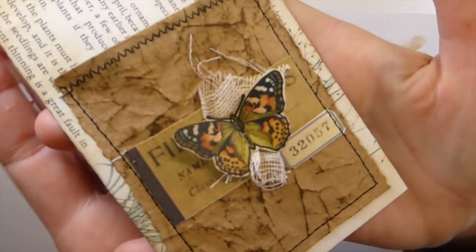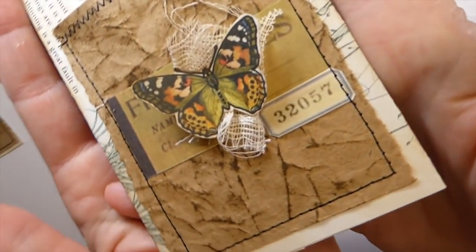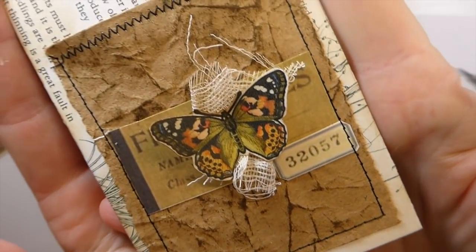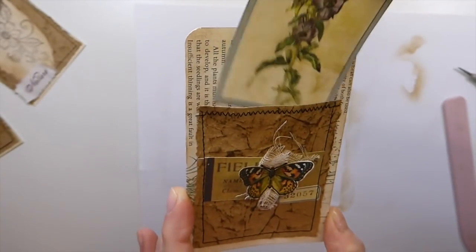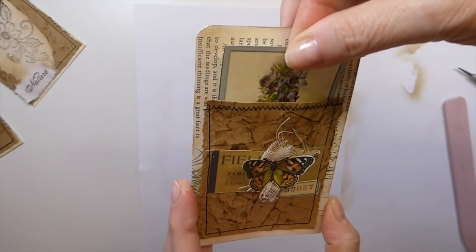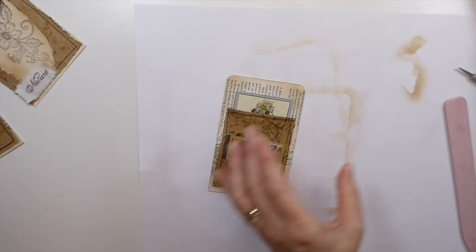Okay guys, now you can see how that looks since I've run that through the machine. And then there's your little pocket. Now let me just add an eyelet up here.